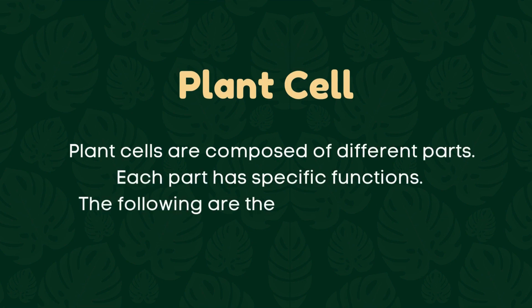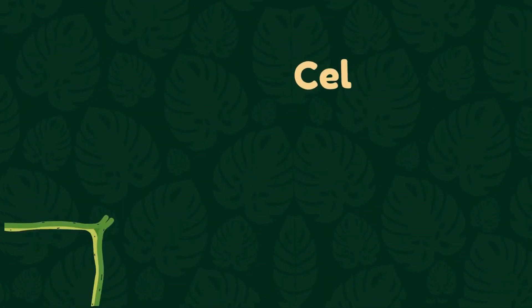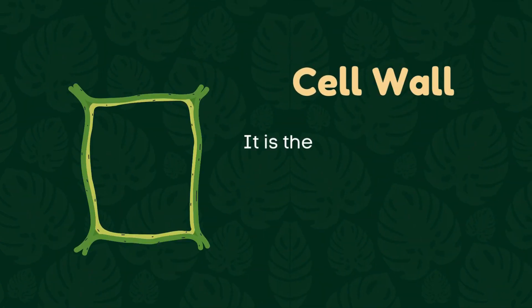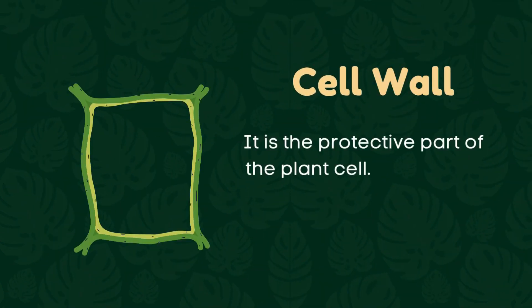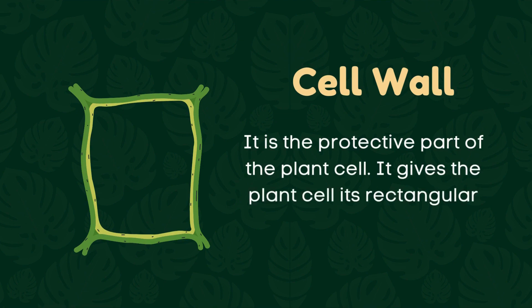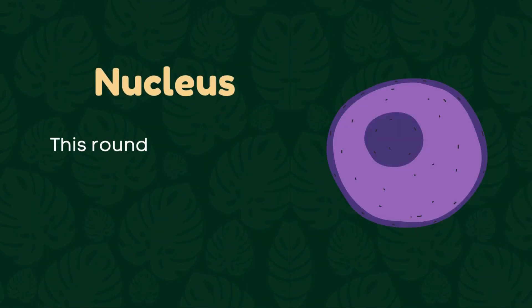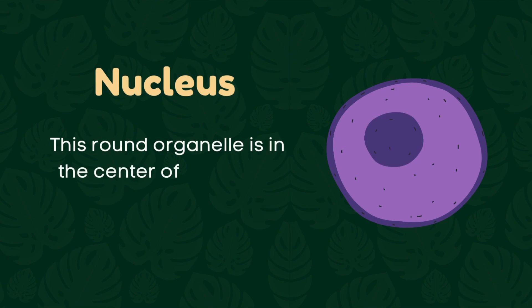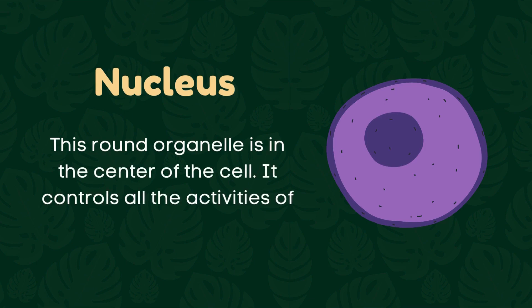The following are the parts of a plant cell. Cell wall: it is the protective part of the plant cell. It gives the plant cell its rectangular shape. Nucleus: this round organelle is in the center of the cell. It controls all the activities of the plant cell.